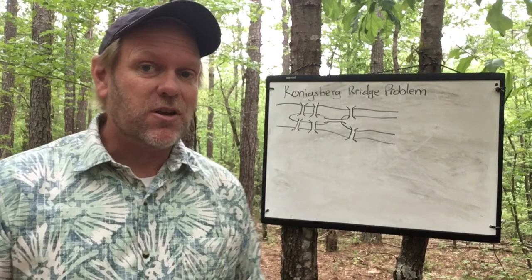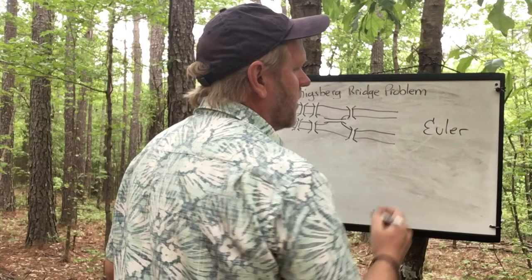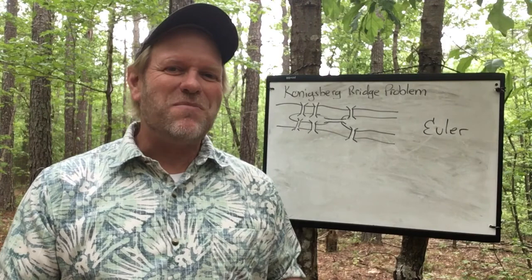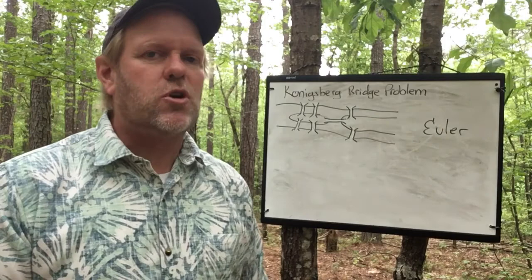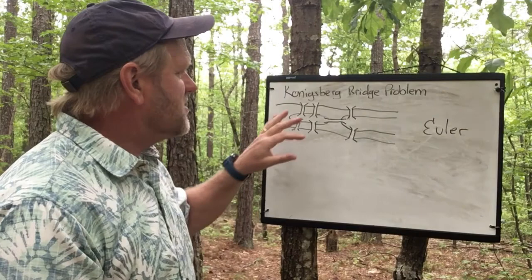So how did graph theory get started? We can give credit to a man named Leonard Euler. Euler was a Swiss mathematician that lived back in the middle to late 1700s when he was doing his work. He came across a problem — there was this town called Königsberg in Prussia, which is northern Germany.